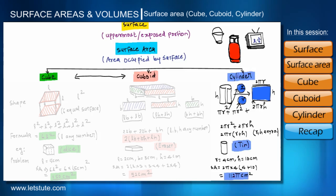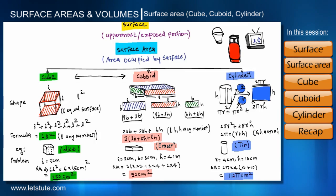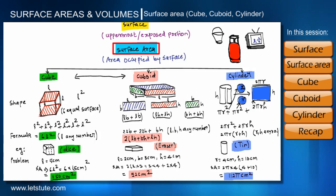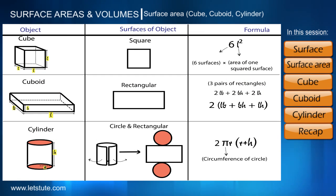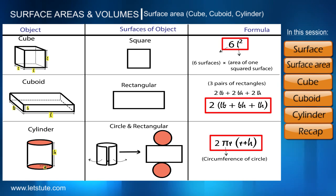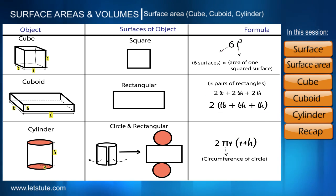Let us have a recap of this session. First, we studied what is surface, then what is surface area. Then we defined three shapes — cube, cuboid, and cylinder — and found their total surface area formulas respectively. We also solved three problems based on these formulas. Thank you.